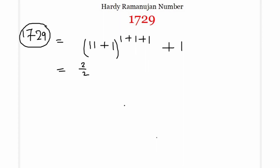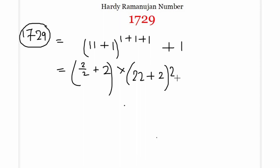Using only the digit 2, we can also represent 1729 in this format: (2/2 + 2) × (22 + 2)² + 2/2. This is the way how we can represent 1729 using 2s only.